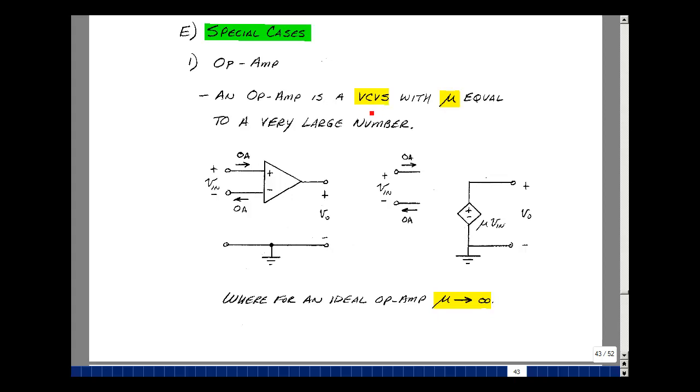An op-amp is actually a voltage-controlled voltage source, where the gain factor mu is a very large number. Let's take our representation of the op-amp, where I have no current entering, no current leaving the input terminals, and a voltage across the input terminals V-in, and a voltage across the output terminals V-out.